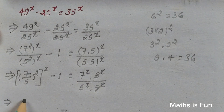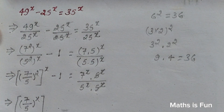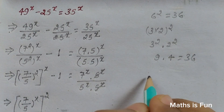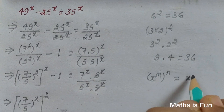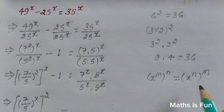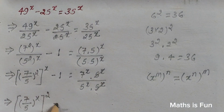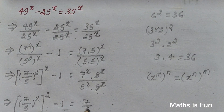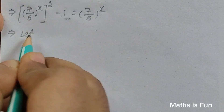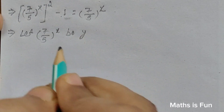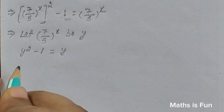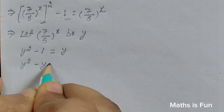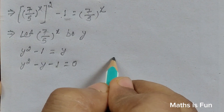In the next step we write 7 over 5 to the power x, whole squared. Using the algebra rule that x to the power m, whole to the power n equals x to the power n, whole to the power m, we can interchange the powers. This gives us 7 over 5 to the power x, whole squared, minus 1, equals 7 over 5 to the power x. Let y equal 7 over 5 to the power x, so we have y squared minus 1 equals y, which gives y squared minus y minus 1 equals 0.